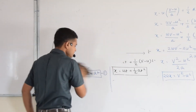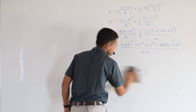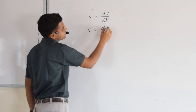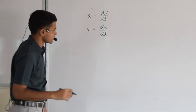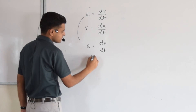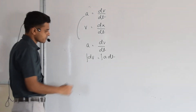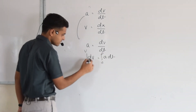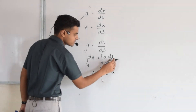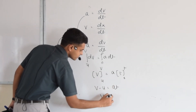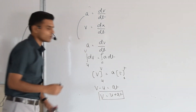The third idea uses differentiation and integration. We know acceleration A equals DV by DT, and speed V equals DX by DT. Taking A equals DV by DT and rearranging gives DV equals A DT. Integrating both sides with speed from U to V and time from 0 to T, since acceleration is constant, we get V minus U equals AT, so V equals U plus AT. That is the first equation of uniform accelerated motion.